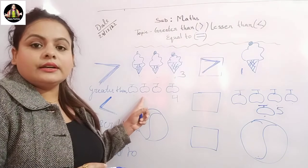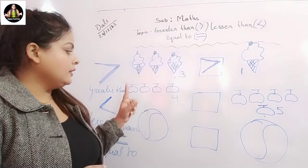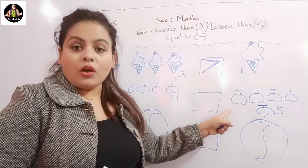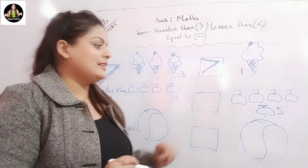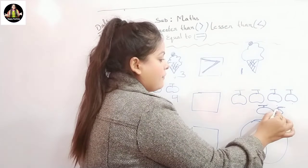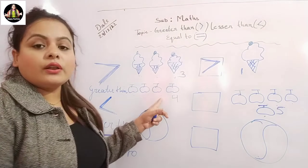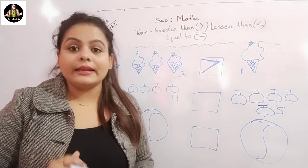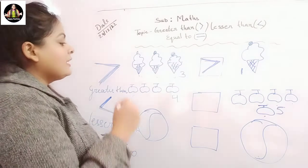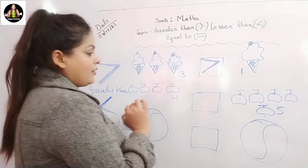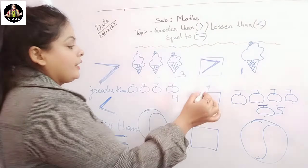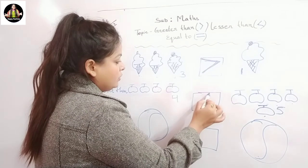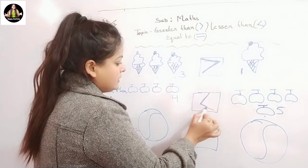Which number is greater — this one or this one? Yes, this one. Here we have five apples and here we only have four apples. So which one does the alligator want to have? Yes, this one. So here the alligator will open his mouth towards this side.